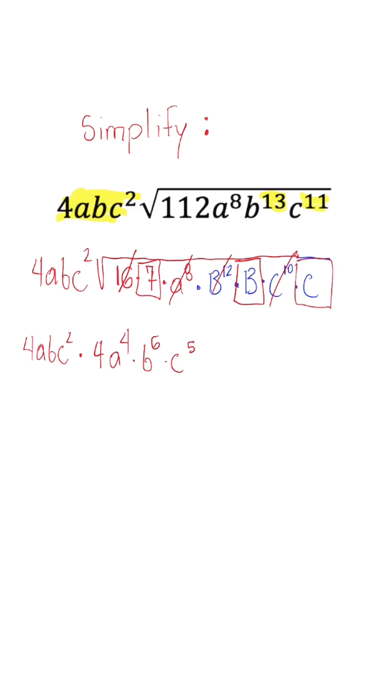So now once we clean this expression up, we have 16, a to the 5th, b to the 7th, and c to the 7th.